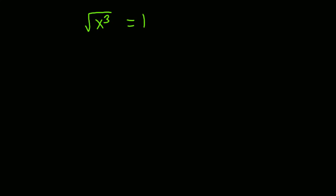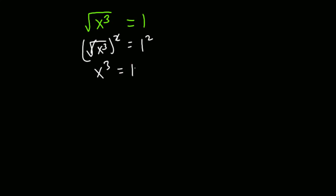Now, by solving this problem I would like to point out a few mistakes that students are likely to make. To solve this problem, we can remove the square root sign by squaring both sides. Squaring both sides gives us x cubed is equal to 1.